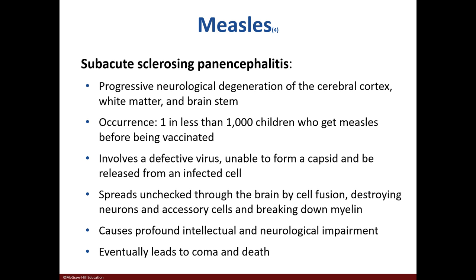The most severe consequence of measles is sub-acute sclerosing panencephalitis, in which there is degeneration of the brain. It's rare, occurring in less than 1 in 1,000 children who are infected with measles before receiving the vaccine. The child experiences neurological impairment and within a matter of months or years, death. This situation occurs years after the child was infected with measles.